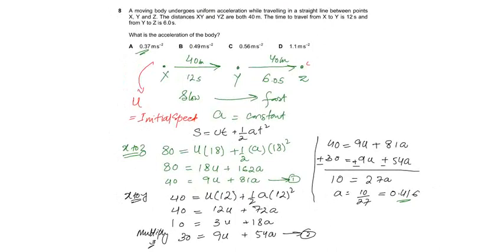We consider motion from X to Y. In X to Y, the distance is 40, the time is 12 seconds. So the equation will convert as 40 equals 12U plus 72A. Simplifying it, it will become 10 equals 3U plus 18A.